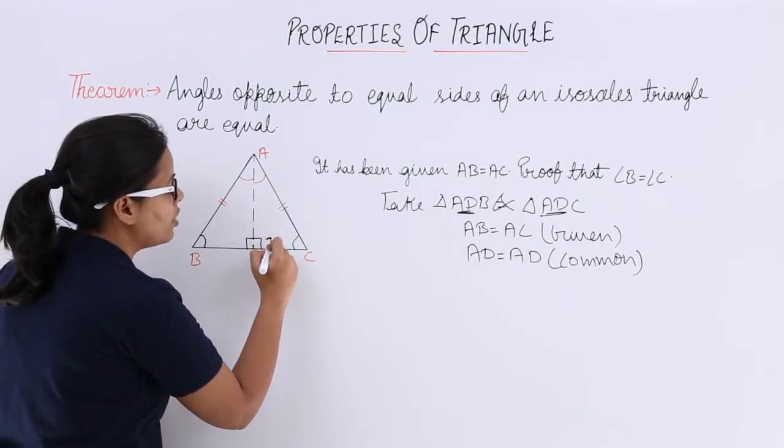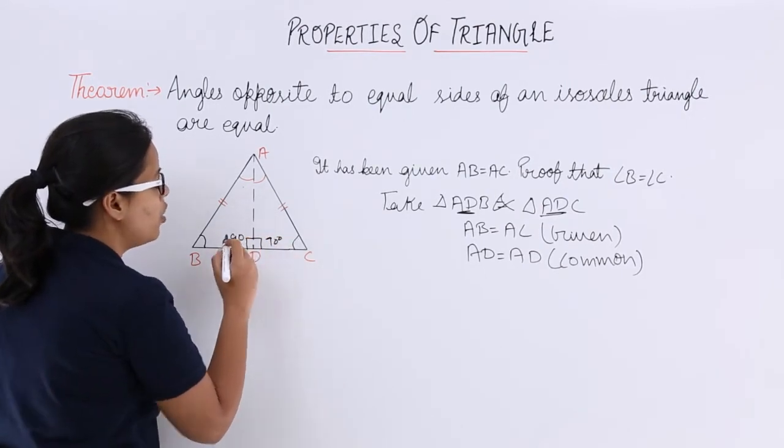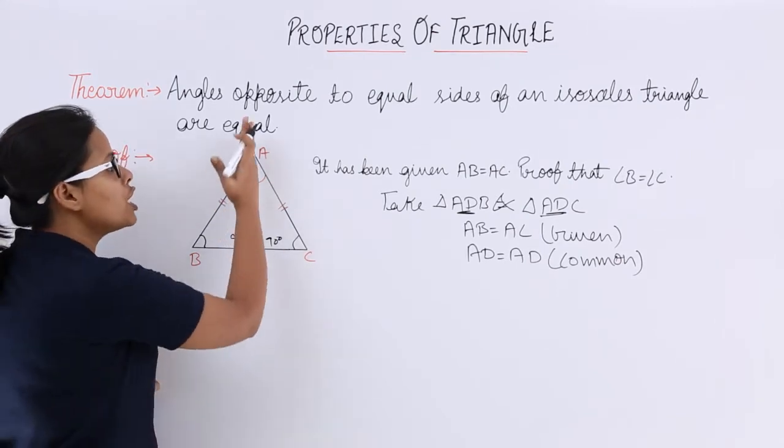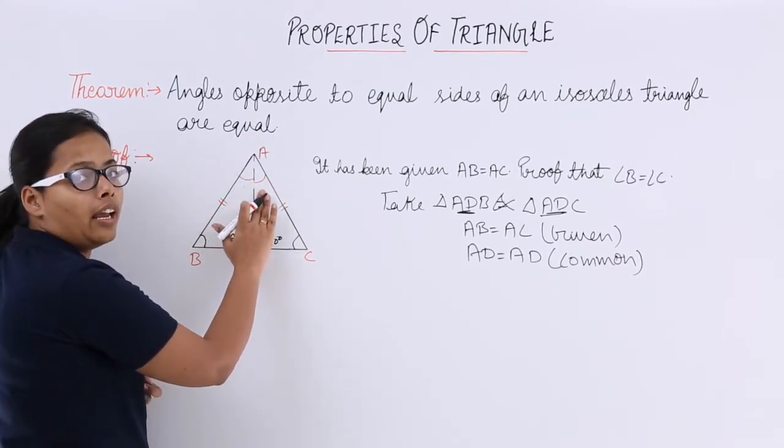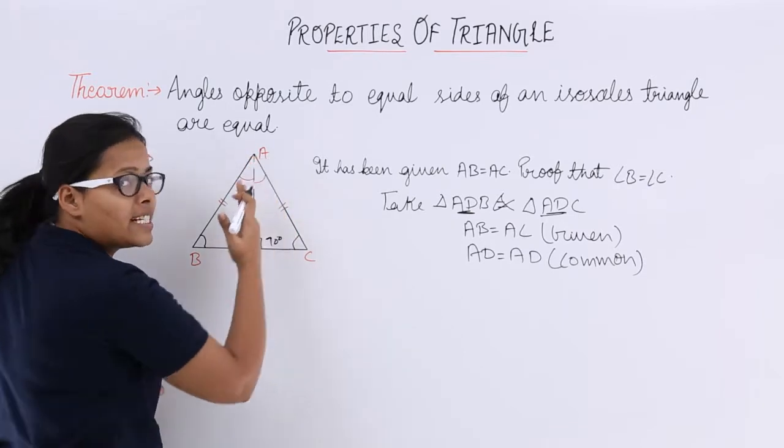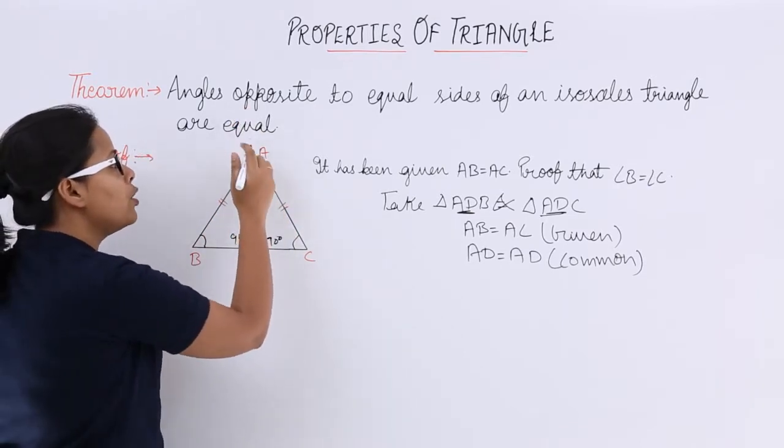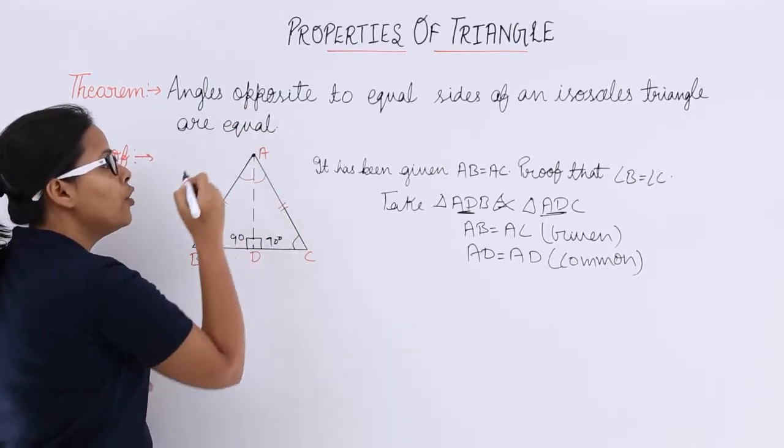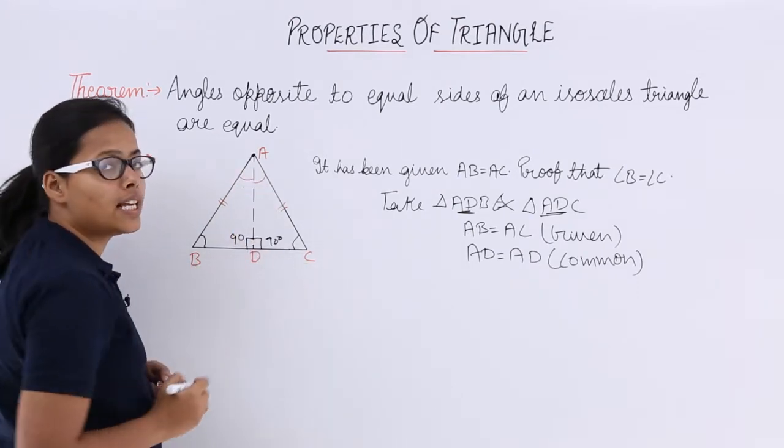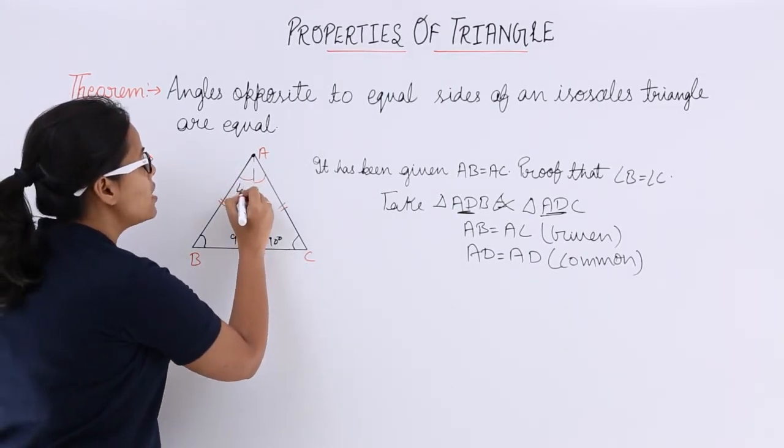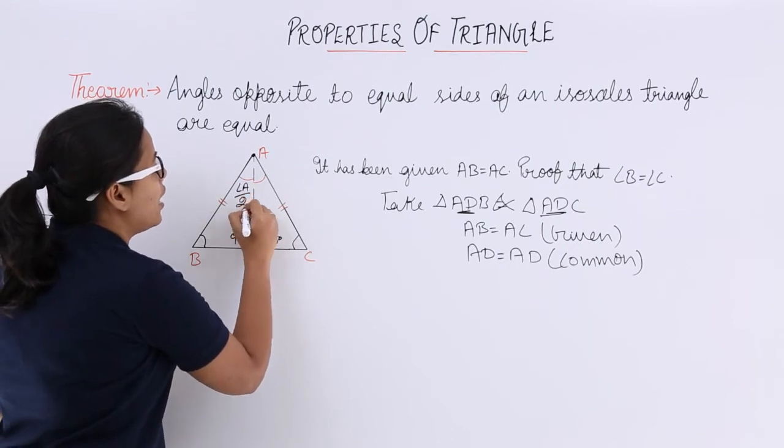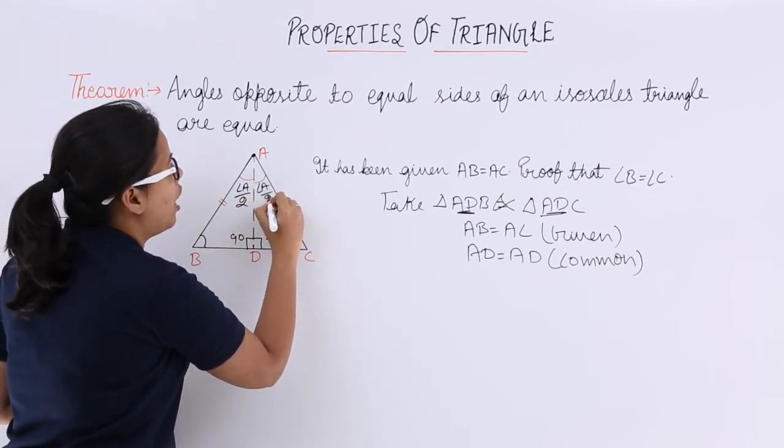You can see that this is perpendicular on base BC which is bisecting angle A because these two sides are equal to each other. So when you draw a perpendicular from A to base BC, you will see that this is dividing angle A into two equal halves.